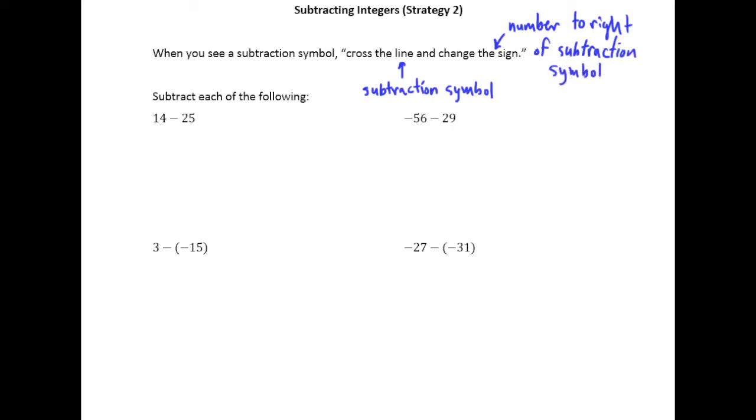Alright, so it looks like this. I've got 14 minus 25, so here's a subtraction symbol. So I am going to cross the line and change the sign. So what we end up with is 14 plus negative 25. And it's just as simple as that.